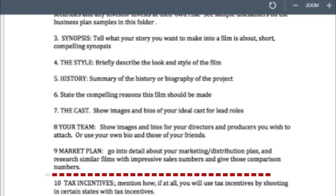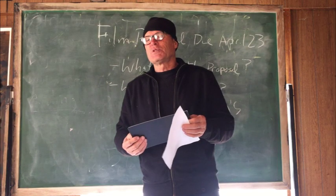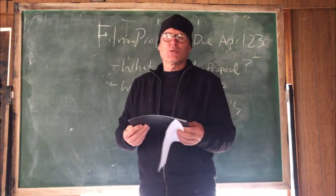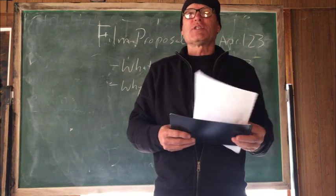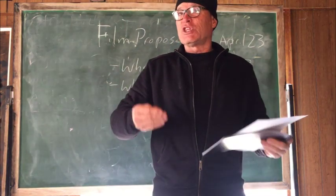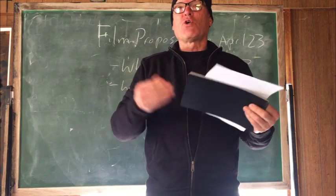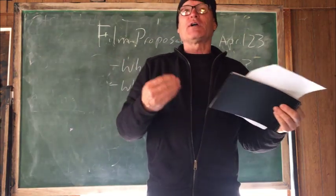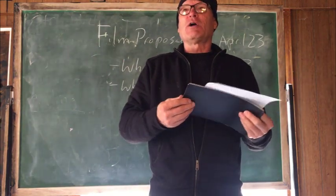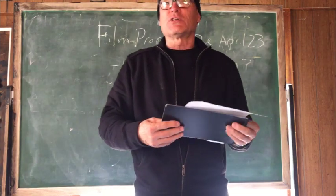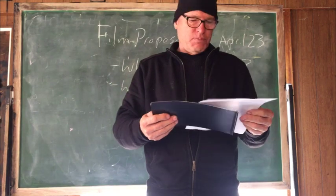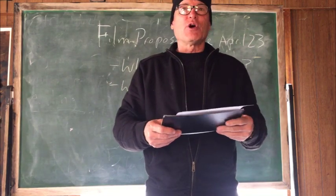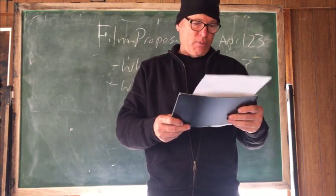A market plan — next week I will go into more detail about distribution and you will be reading articles about distribution in your motion picture book. But you should be able, in a paragraph, to say how you'll get this film to market — how to get a foreign sales agent involved, how to allow it to open in 3,000 theaters because of the genre and past success. You could look at how other films are distributed and have a market plan.